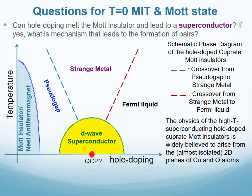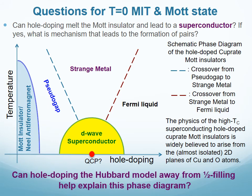This includes the pseudo-gap and strange metallic phases. Further, there rages a debate on whether the D-wave superconducting dome is hiding a novel quantum critical point. The obvious question for us is: can the hole-doped Hubbard model offer a unified explanation of the complexity of the phase diagram?